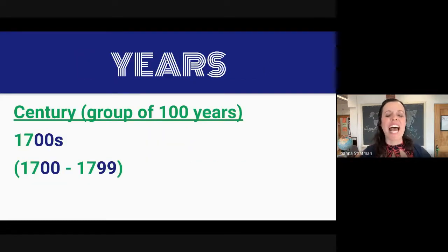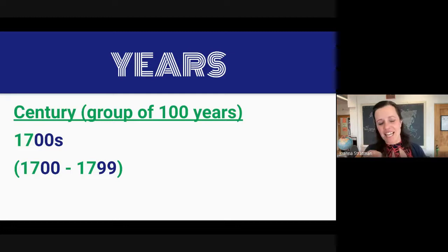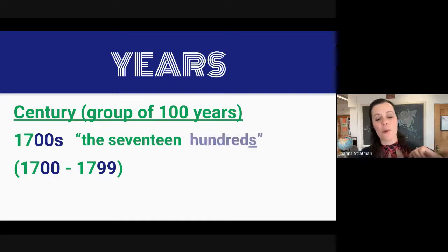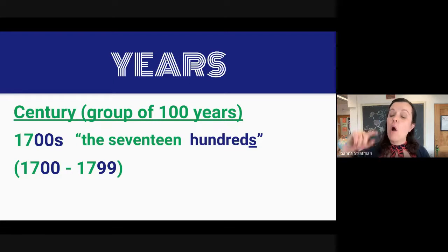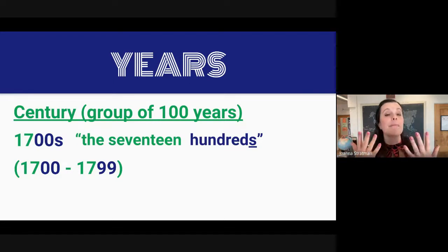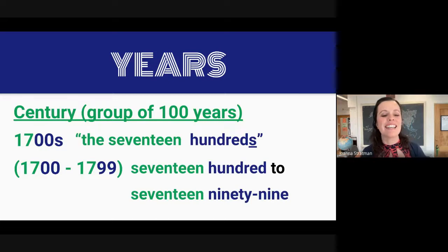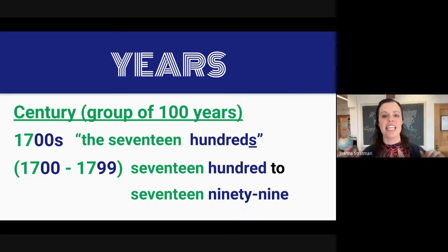Next, my friends, let's look at a century. A century is a group of 100 years together. This century has an S on the end because it is plural. In a similar way, we say the first two numbers together — so, the 17 — and then with 00, we say hundreds. Hundreds is plural to show that it is many years, not just one. The century of the 1700s means the years 1700 to 1799. This 100-year span is called the century of the 1700s.